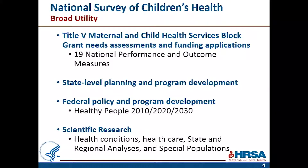We believe the survey has broad utility. The primary use is that it is the data source for 19 of the Title V performance and outcome measures. Once folks get familiar with the survey for those purposes, they use it for other state planning needs. Our federal partners also use the data — namely for Healthy People, but also for efforts around developmental delay and autism. And certainly, many folks use the survey for research purposes, which is a lot of what you'll be seeing today.